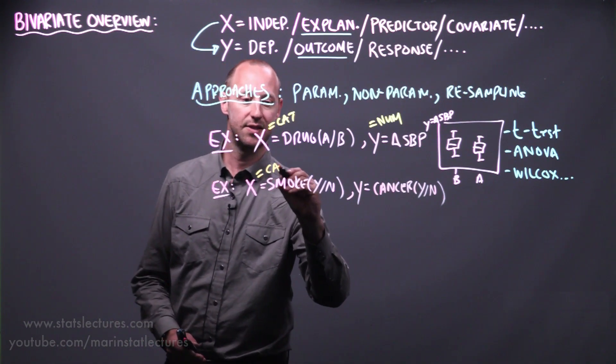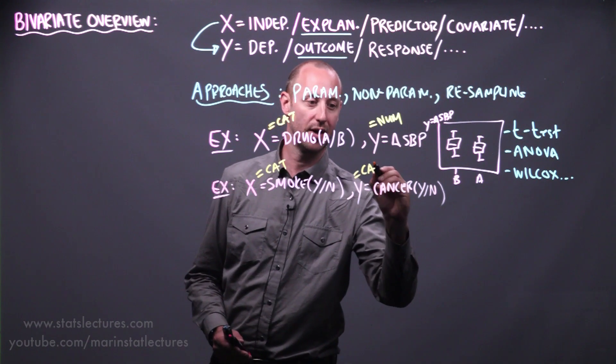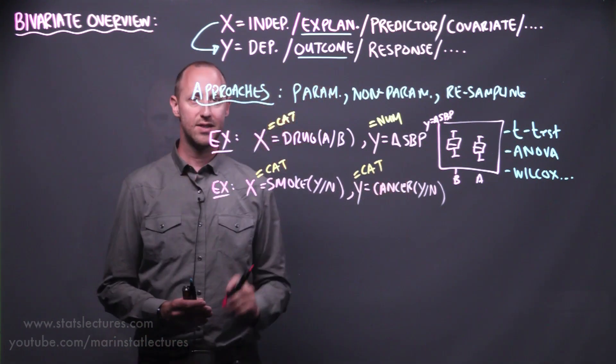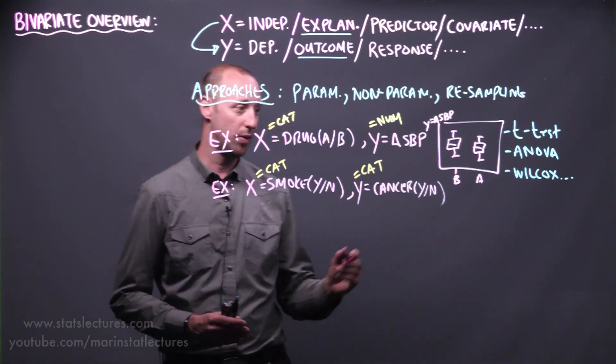To visualize the relationship between these two, we first want to think about what type of variable is x and y. Here we can notice x is a categorical variable, y, our outcome, is also categorical.